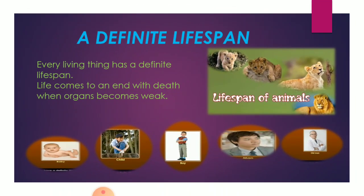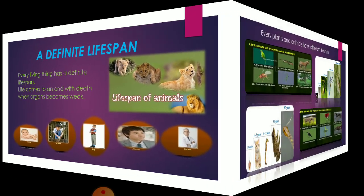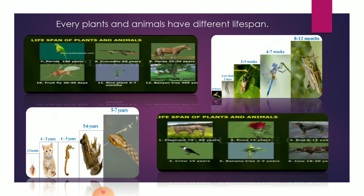Next characteristic: a definite lifespan. Every living thing has a definite lifespan. Life comes to an end with death when organs become weak. That means every living thing has a certain duration of life, after which it comes to an end when organs become weak. Every plant and animal has a different lifespan. Some animals and plants live for many many years and some live for only weeks or months. You can see this in the pictures given below.